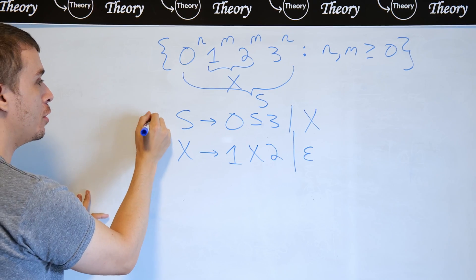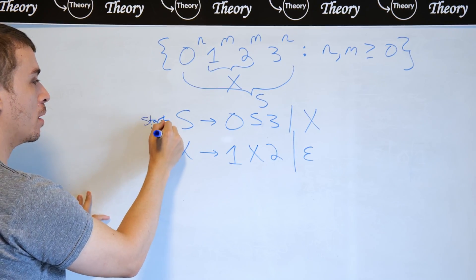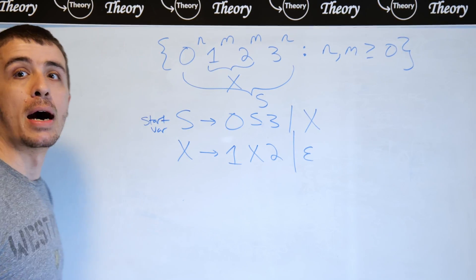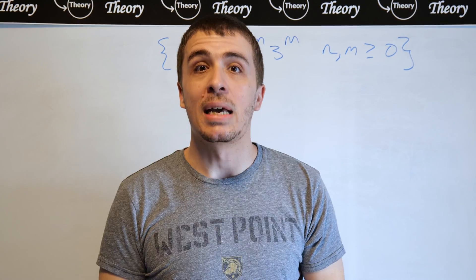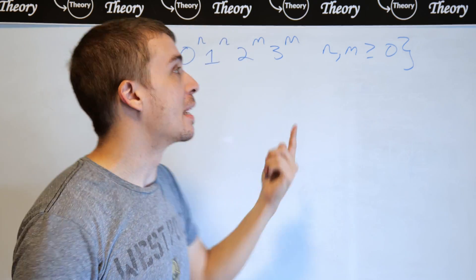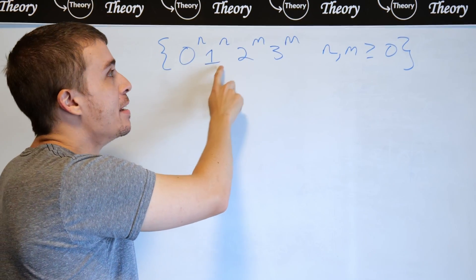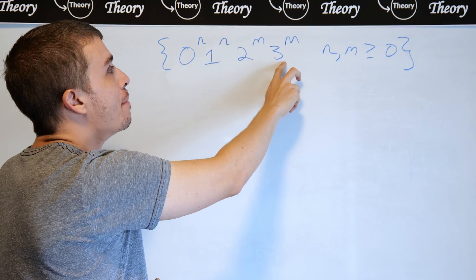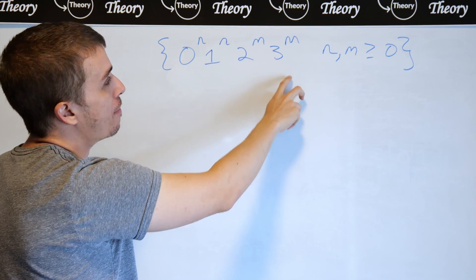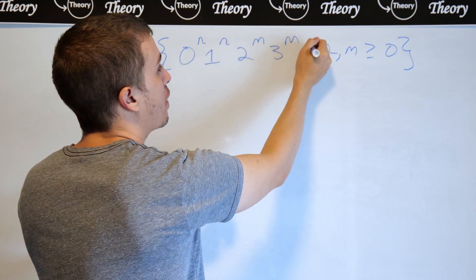Let's make a context-free grammar for the language 0^n 1^n 2^m 3^m, where n and m are at least zero.